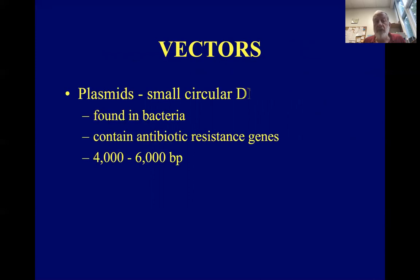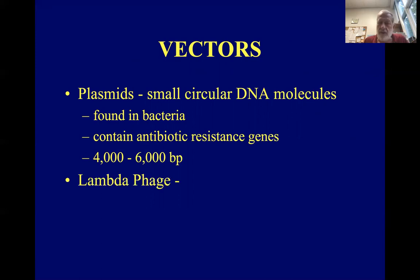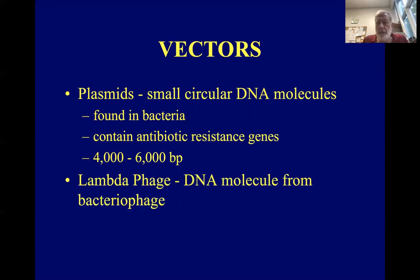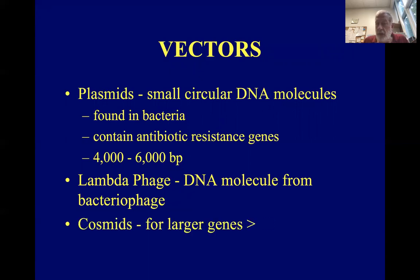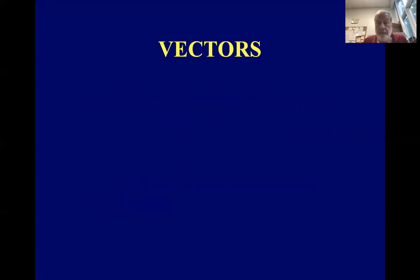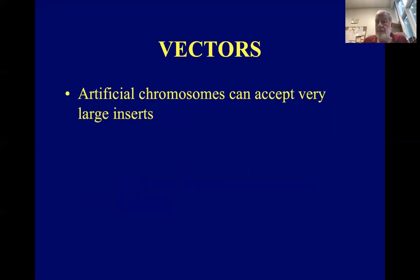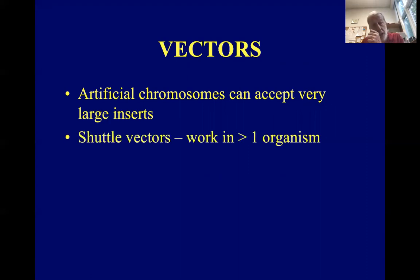Let's discuss these vectors. Plasmids are small circular DNA molecules naturally found in bacteria, often containing antibiotic resistance genes, ranging from four to six thousand base pairs in size. Lambda phage uses DNA from a bacteriophage. Larger circular molecules called cosmids can hold inserts up to 15,000 base pairs. Artificial chromosomes can accept very large inserts, and shuttle vectors work in more than one organism, such as E. coli and yeast.